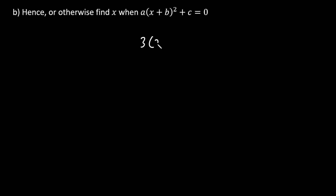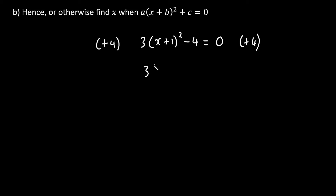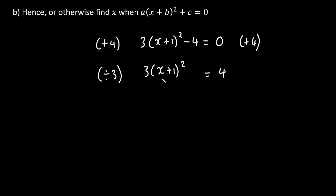To isolate x, first get rid of the − 4 by adding 4 to both sides: 3(x + 1)² = 4. Next, get rid of the 3 — it's being multiplied, so divide both sides by 3. I wouldn't recommend square-rooting first because you'd have to square root everything on the left including the 3; it's best to divide by 3 first. Dividing gives us (x + 1)² = 4/3.